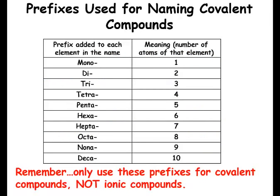Here are the prefixes — and again, do not apply these to ionic compounds; we balance charges in ionic compounds, not in covalent. Mono = one, di = two, tri = three, tetra = four, penta = five, hexa = six, hepta = seven, octa = eight, nona = nine, deca = ten. We use these prefixes on each word in the name of the covalent compound to indicate how many of each atom there are.